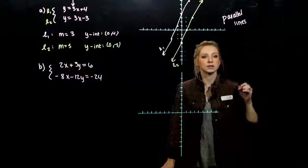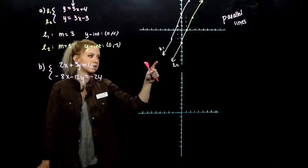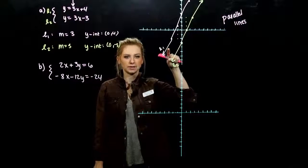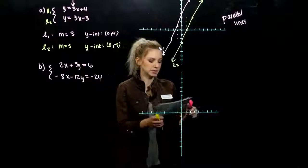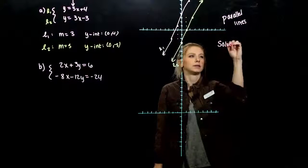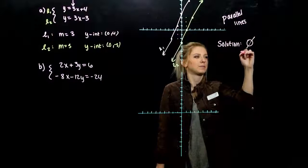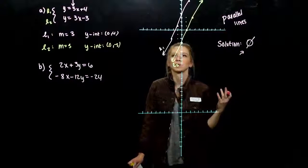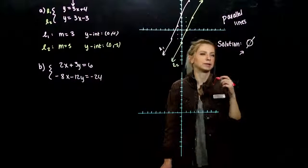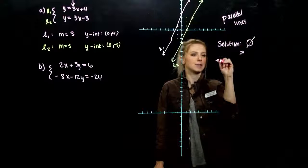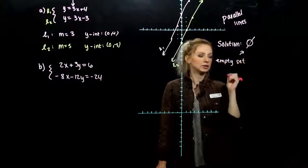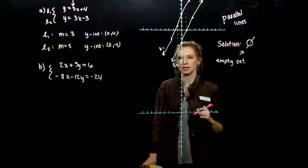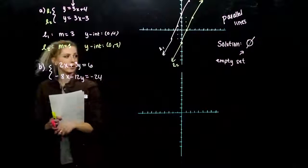So will we ever have a solution to this system? They're never touching, and I can never choose one point that satisfies the yellow line that will also satisfy the pink. So in this case, our solution set is empty. We don't have any. There won't be any numbers or any pairs that satisfy both lines. So this is called the empty set.